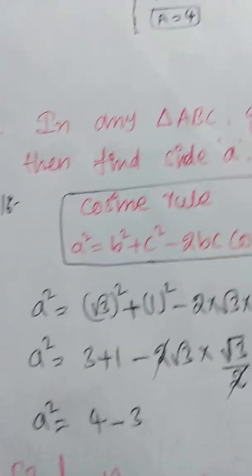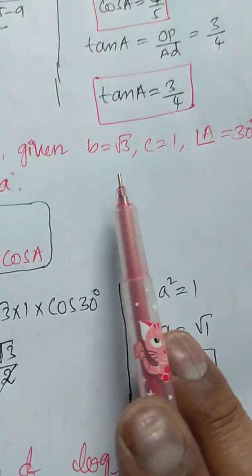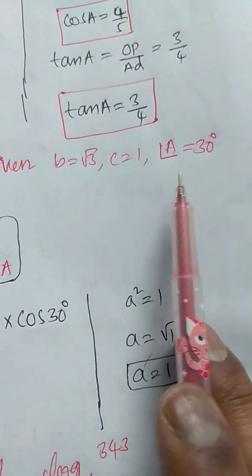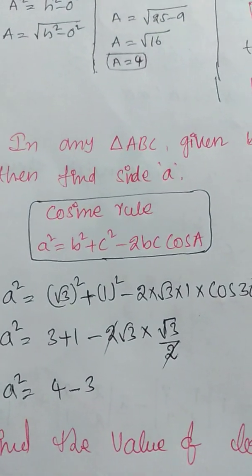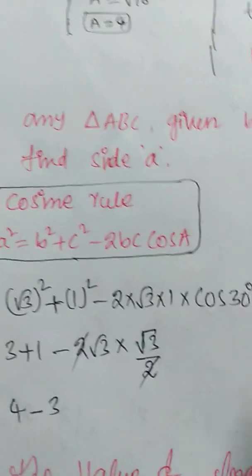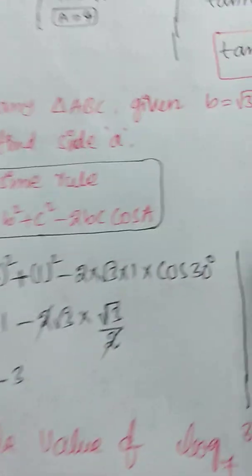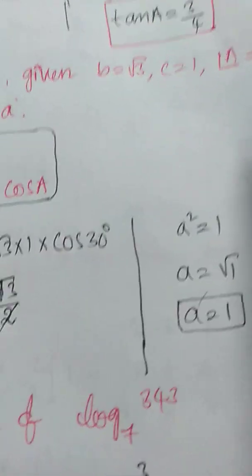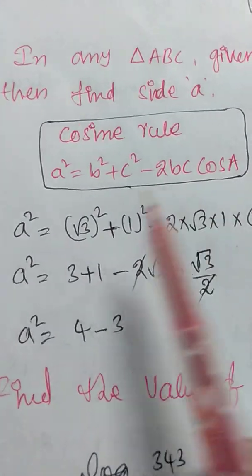Next question: in any triangle ABC, given side b equals root 3, side c equals 1, and angle A equals 30 degrees, find the value of side a. Write the given values: b equals root 3, c equals 1, angle A equals 30 degrees. We find side a using the cosine rule.